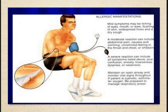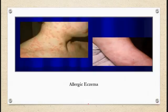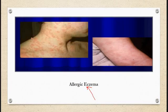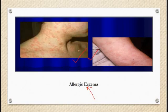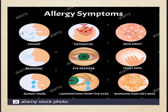Severe reactions include all the above symptoms plus confusion, anxiety, paleness, hoarseness, dyspnea, and weakness. This next picture shows allergic eczema on a patient's skin — red patches visible on the patient's body with redness. The next slide shows more allergy symptoms including redness of the eyes.